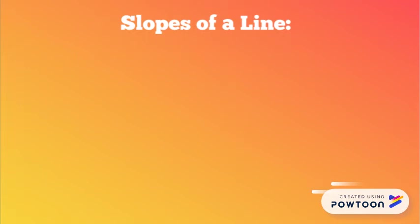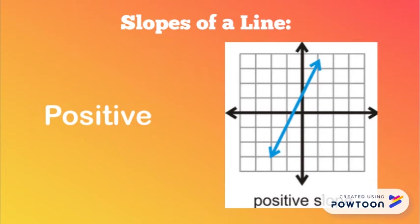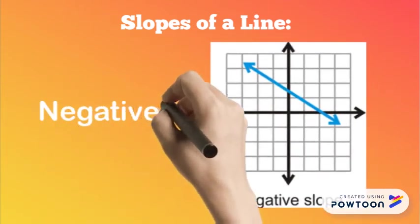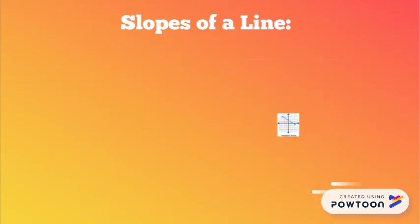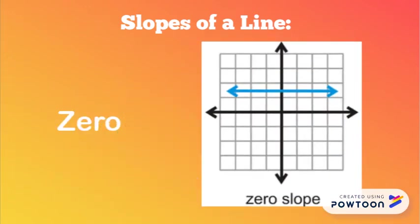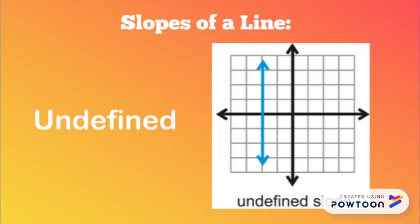There are 4 slopes of a line: first, a positive slope — a line increasing; a negative slope — a line decreasing; a zero slope — a horizontal line; and an undefined slope — a vertical line.